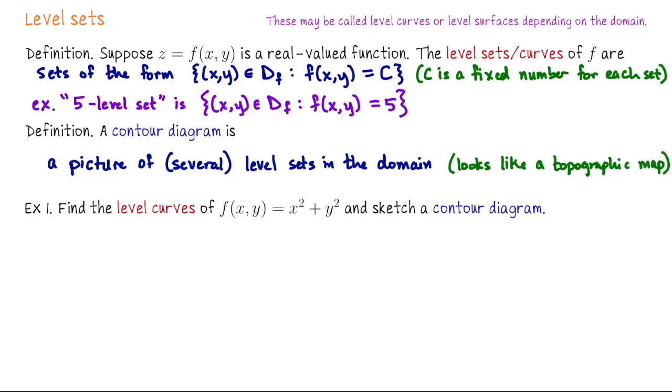Let's discuss the form of the level curves for the function f of x and y equals x squared plus y squared, and then we'll sketch a contour diagram. So what I like to do is imagine I fixed a number c. Then you ask yourself, what points in the domain of this function would get sent to c when we plug them into f? In particular for this function that's like asking what points x and y would satisfy x squared plus y squared equals c.